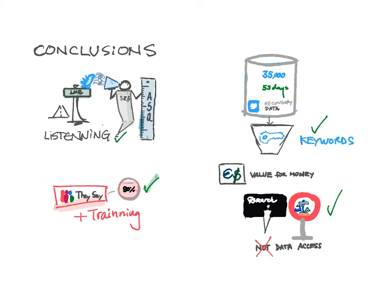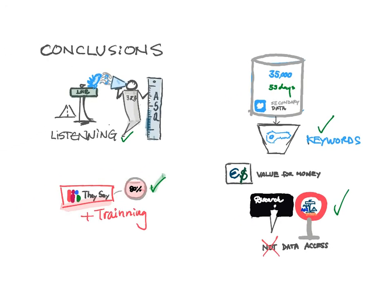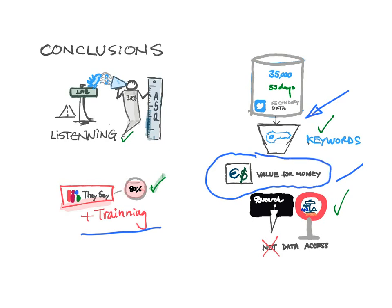We can conclude that Twitter is a tool that can be used to listen to conversations between the airport and the passenger to measure airport service quality. Sentiment analysis tools seem to be working well and could be further developed with some training. Keywords have been effective in allocating tweets into the different airport processes and attributes. This approach also provides good value for money, given that traditional questionnaire-based research can be long and costly.